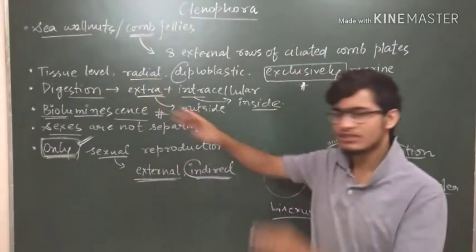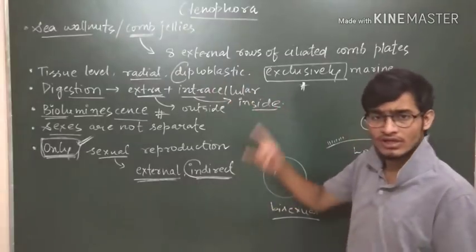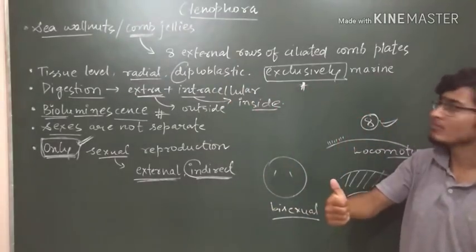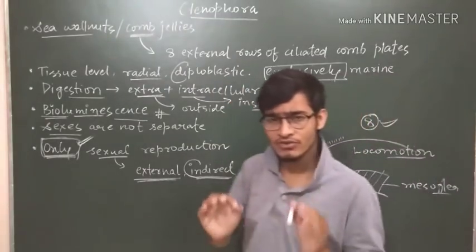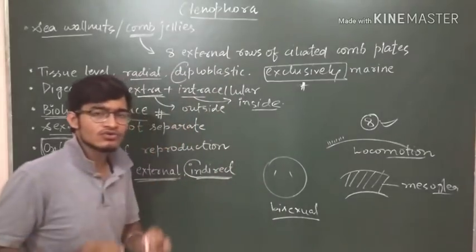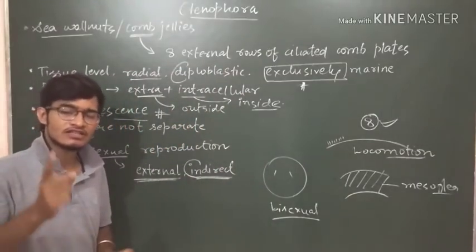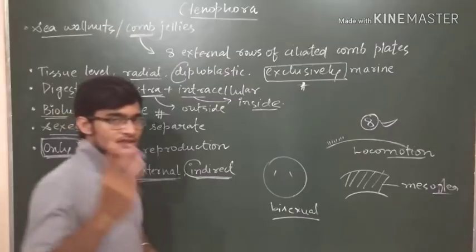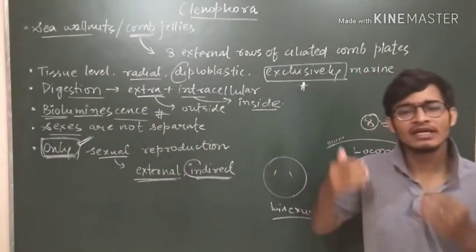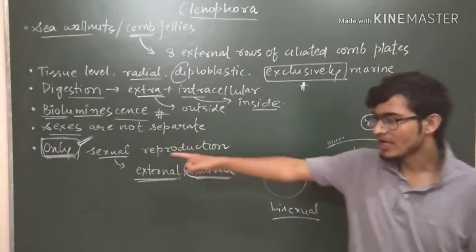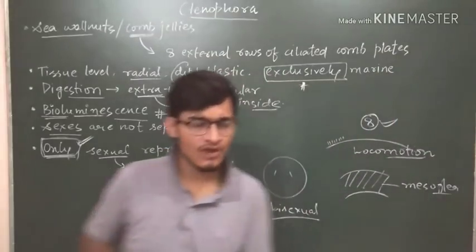Tissue level, you know very well. Radial symmetry, you know. Diploblastic, you know. These are exclusively marine, very important point. What is the peculiar feature? Eight external rows of ciliated comb plates, that's why these are known as comb jellies. The third important thing is they are bioluminescent, they can emit light. After that, only sexual reproduction is found.